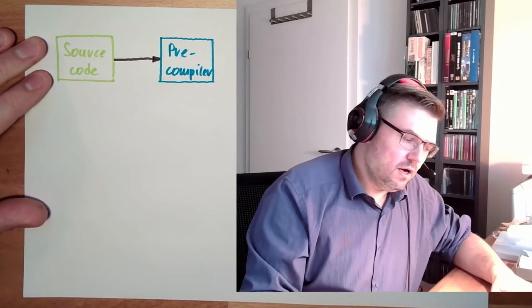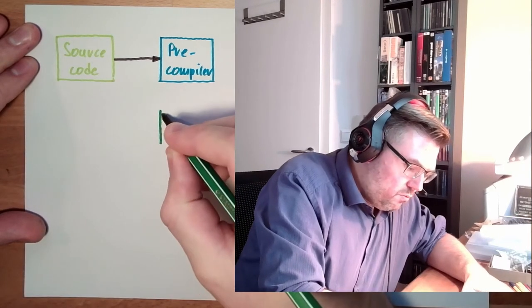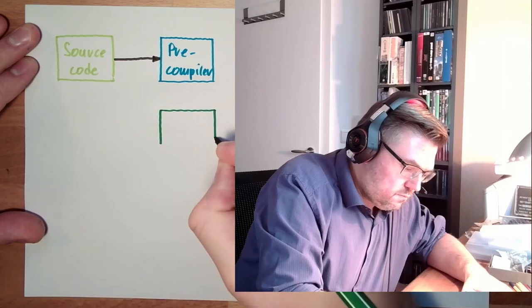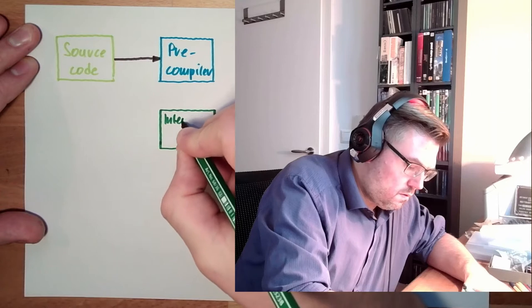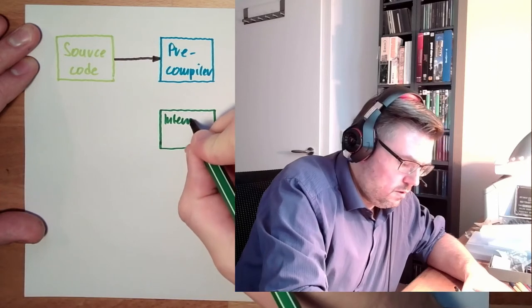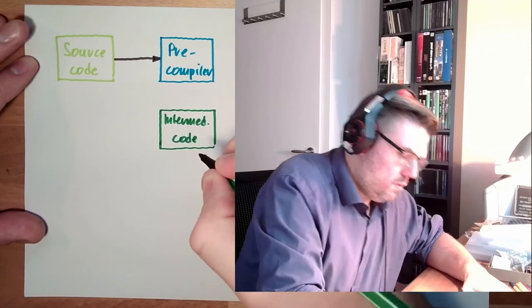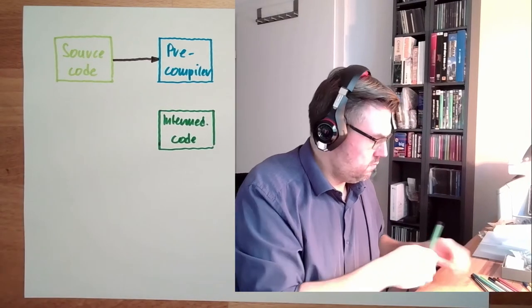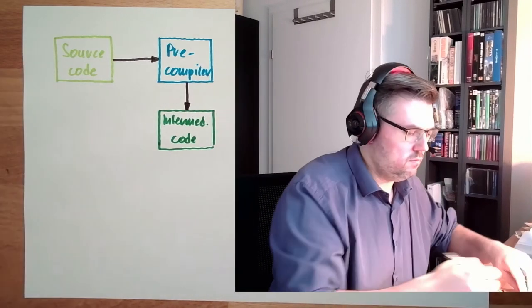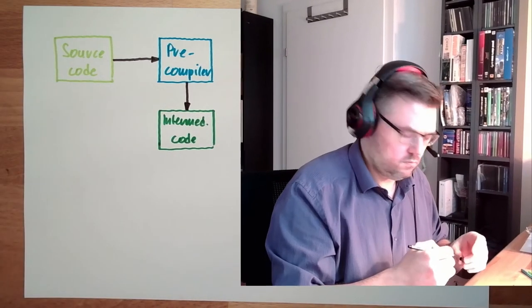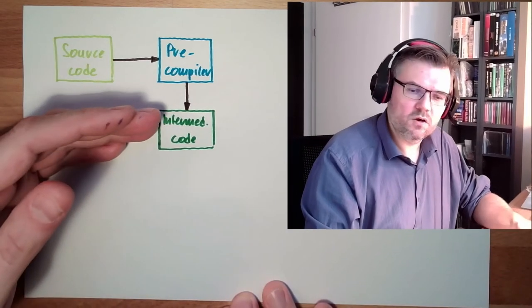Then there is this. The output of this is some intermediate code. Intermediate code. It's a new file somewhere located on our computer or where the compiling is running.